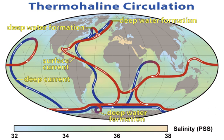Hence, a recent and popular name for the thermohaline circulation, emphasizing the vertical nature and pole-to-pole character of this kind of ocean circulation, is the meridional overturning circulation.